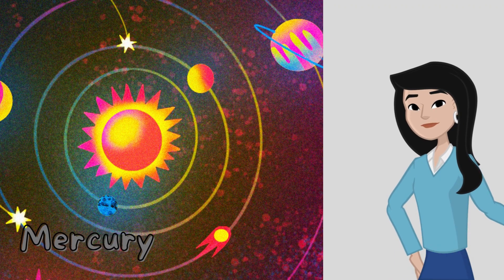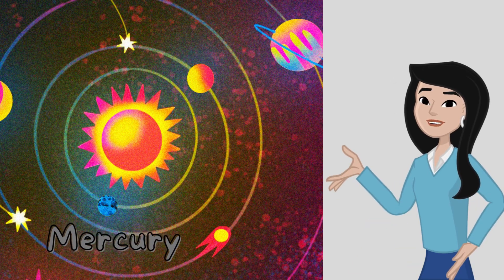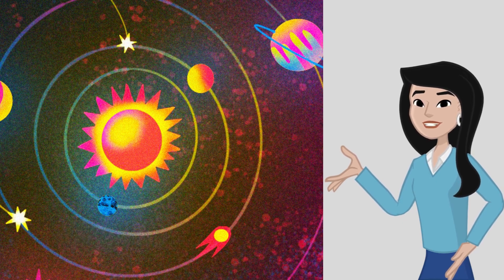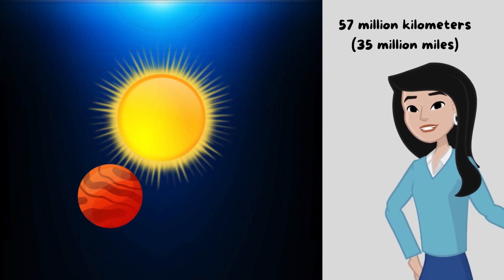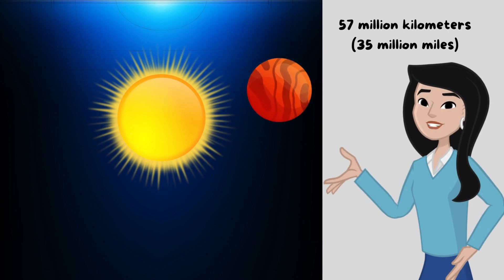Mercury is named after the Roman god of commerce, travel and thievery, Hermes in Greek mythology. It's the closest planet to the sun, just 57 million kilometers, 35 million miles away. Imagine living that close to a cosmic fireball.